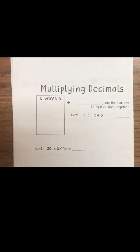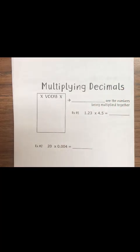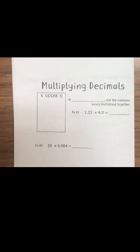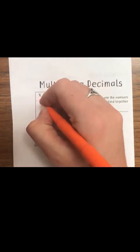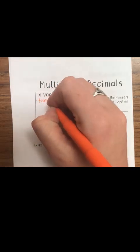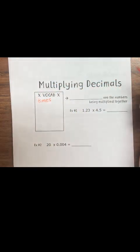Today we are going to start talking about multiplying with decimals. It's pretty much just like regular multiplying — the only difference is of course we have decimals. Before we get started, let's talk about some vocabulary words that actually mean to multiply. The first one is pretty simple: the word 'times.' If you see the word times, that means we are going to be multiplying every time.